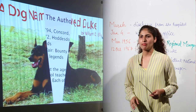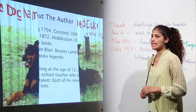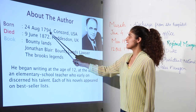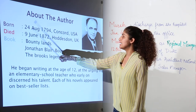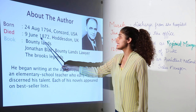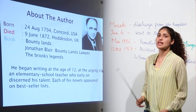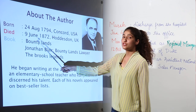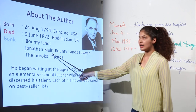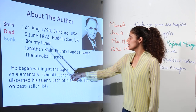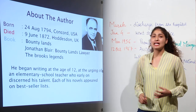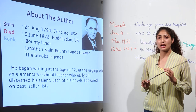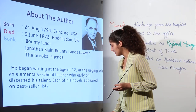Let us know something about our author William D. Ellis. He was born on 24 August 1794 in the US and died on 9 June 1872 in UK. Some of his major contributions are Bounty Lands, Jonathan Blair Bounty Lands Lawyer, and The Brooks Legends. He began writing at the age of 12, and each of his novels appeared on the bestseller list.